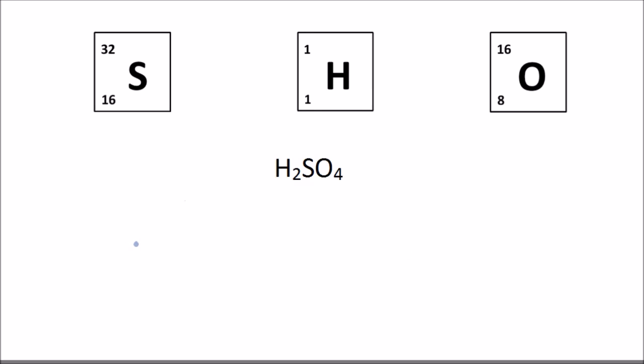Okay, so the relative formula mass for H2SO4. First we start with the two H's. So it's going to be two times one because the relative atomic mass of hydrogen is one. We add that to the relative atomic mass of sulfur, which is 32,